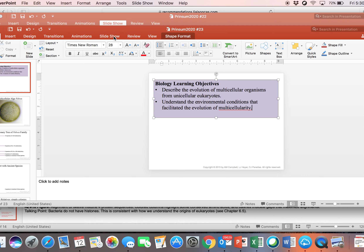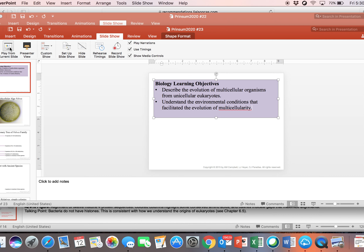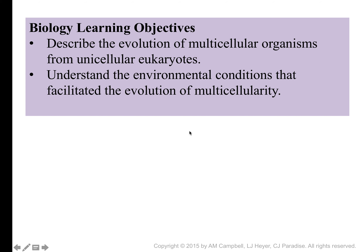This is podcast number 23, continuing our discussion of evolution and how we went from one-celled organisms to multicellular organisms. Eukaryotic organisms are the exclusive multicellular organisms. So how is it that we evolved multicellularity? You as a person are made up of trillions of cells. And why is that better than a single cell?